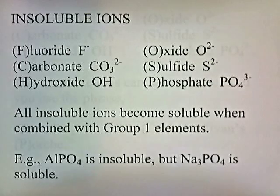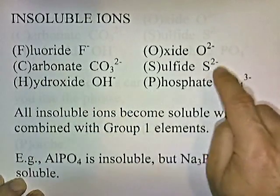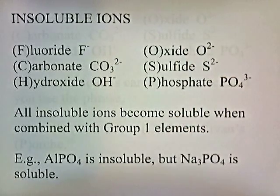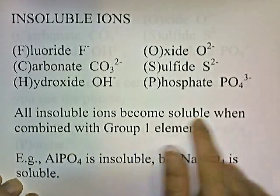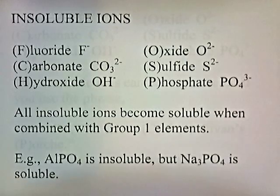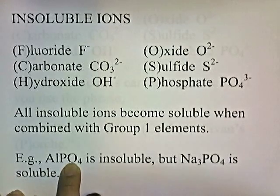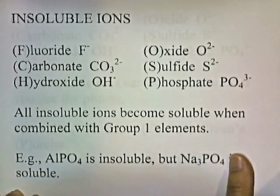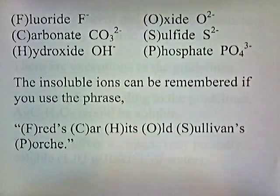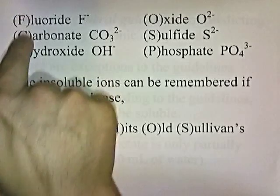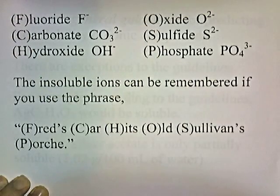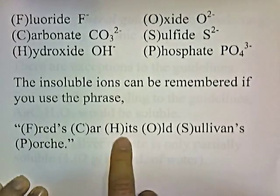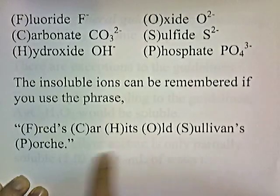The insoluble ions are fluoride, carbonate, hydroxide, oxide, sulfide, and phosphate. If you see these ions in a compound, it'll be insoluble. However, all insoluble ions become soluble when combined with group 1 elements. For example, aluminum phosphate is insoluble since it has phosphate, but sodium phosphate is soluble because sodium is a group 1 element. The memory phrase for the insoluble ions is: Fred's car hits old Sullivan's Porsche — fluoride, carbonate, hydroxide, oxide, sulfide, phosphate.